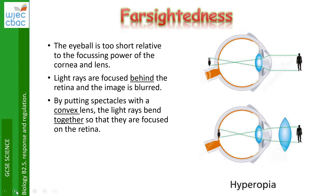In this case the eyeball seems to be too short relative to the focusing power of the cornea and lens, so the light rays would be focused beyond the retina and the image would be blurred, even though light cannot pass outside of the eyeball. By putting spectacles with a convex lens on, the light rays bend together so they are focused on the retina.